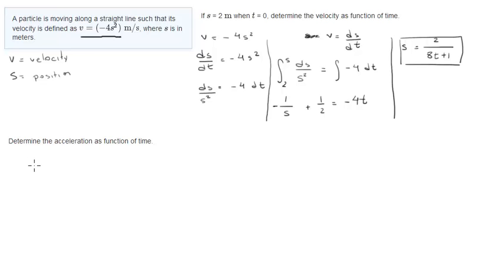Now the acceleration, this is very easy. All you really have to do is plug in this function onto here. You get v is equal to negative... 2 over (8t plus 1) squared.